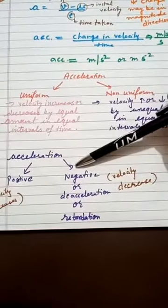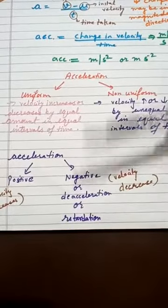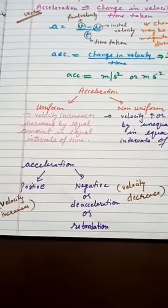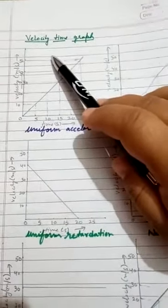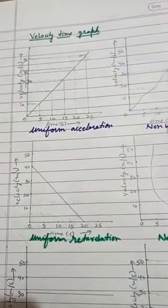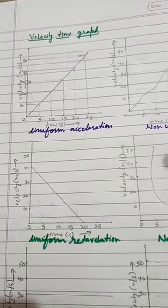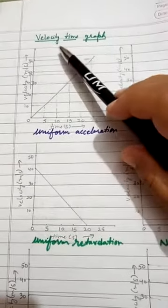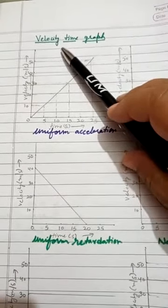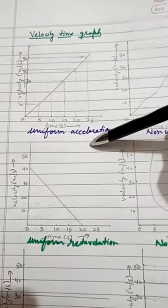Negative acceleration is also known as deceleration or retardation. Now we have velocity-time graphs. The velocity-time graph is also known as the speed-time graph — both graphs are the same. In numericals, whether it says velocity or speed, they refer to the same thing, so velocity-time graph and speed-time graph are one and the same.